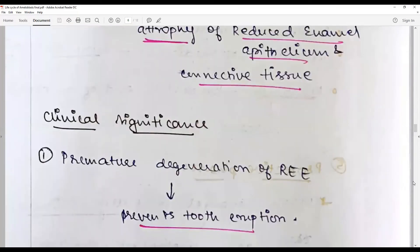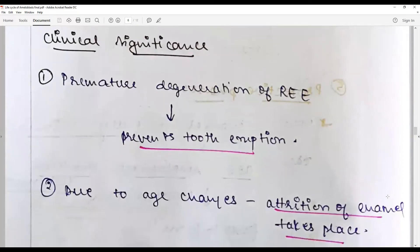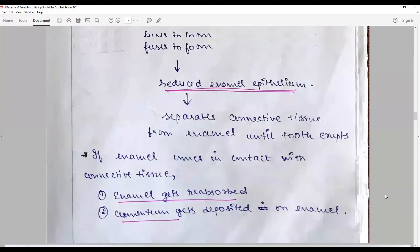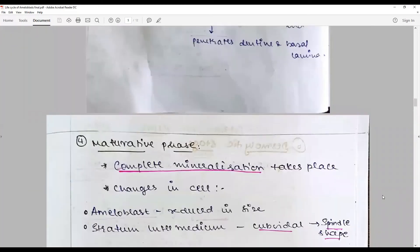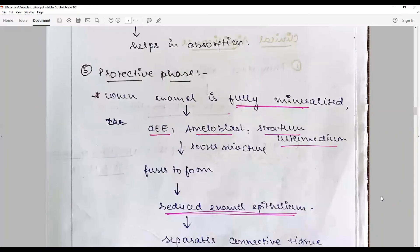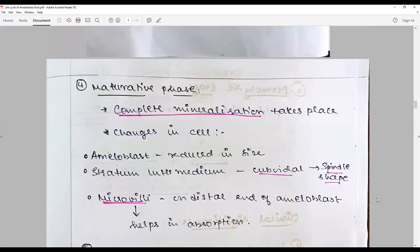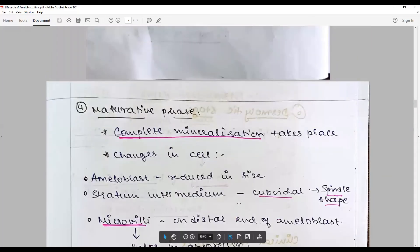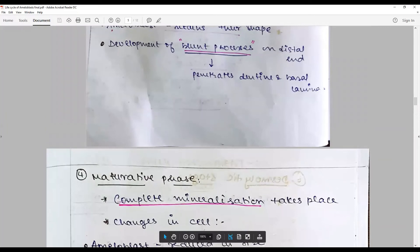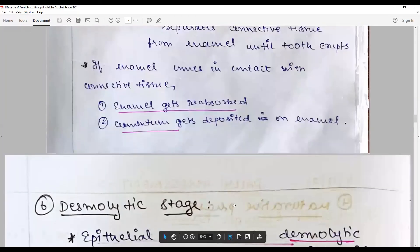Clinical significance: premature degeneration of reduced enamel epithelium will prevent tooth eruption. If there is a difference in the organizing stage or the formative stage, amelogenesis imperfecta can happen. If there is excessive fluoride during the maturation phase, mineralization phase, then instead of calcium hydroxyapatite crystals, you will get fluoroxyapatite crystals that impart a brown stain. This happens with a lot of water fluoridation.